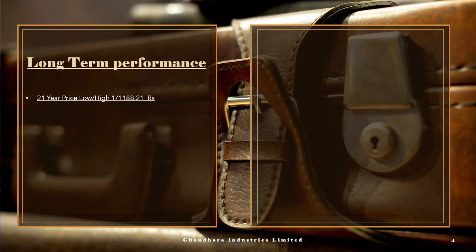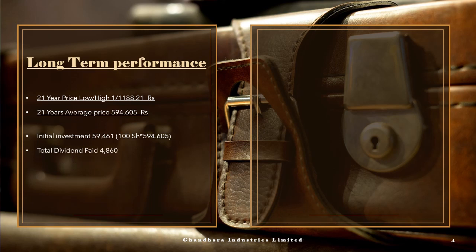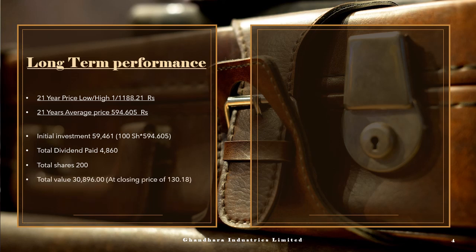Looking at the company's long-term performance over 21 years: the lowest share price was 1.00 rupee and the highest share price was 1,188.21 rupees. The 21-year share average price was 594.605 rupees. If you held 100 shares, your total cost would be 59,461 rupees. Total dividends paid to shareholders over 21 years were 4,860 rupees. With 100 shares and a closing price of 130.18, total value is 30,896 rupees — a total negative return of minus 48%, or year-on-year minus 2.4% negative return.